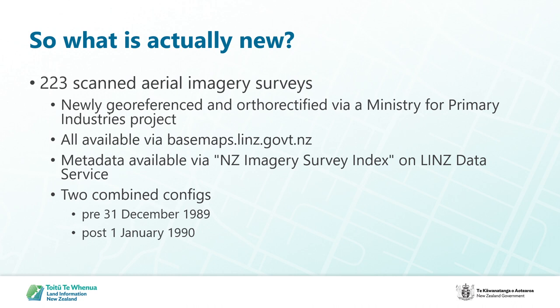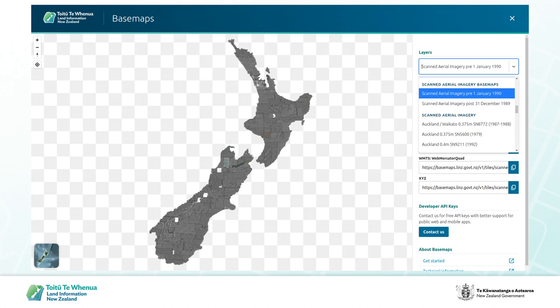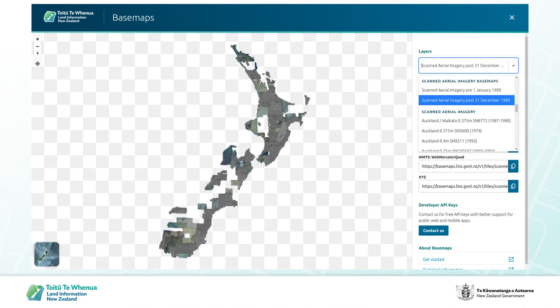So what is actually new? We have added 223 scanned aerial imagery surveys — more than double the amount of imagery we previously had available. These were previously only available as individual photo frames on RetroLens and are now all available via basemaps, along with two combined configs. These were georeferenced and orthorectified thanks to an initiative from the Ministry for Primary Industries. One config covers imagery from the mid-1970s through to 1990, while the other combines imagery from 1990 through to the mid-2000s.